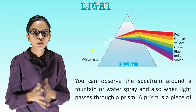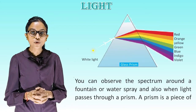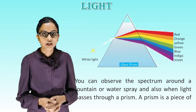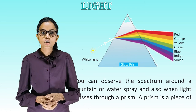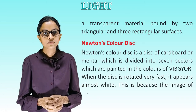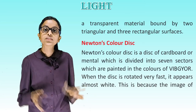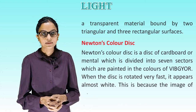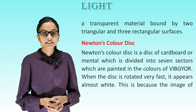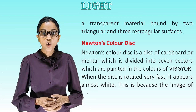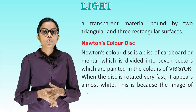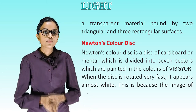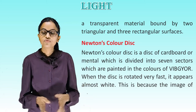You can observe the spectrum around a fountain or water spray and also when light passes through a prism. A prism is a piece of transparent material bound by two triangular and three rectangular surfaces. Newton's color disc is a disc of cardboard which is divided into seven sectors painted in the colors of VIBGYOR.